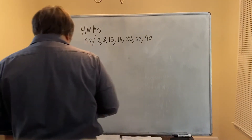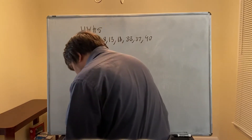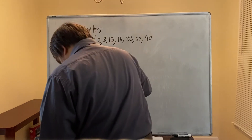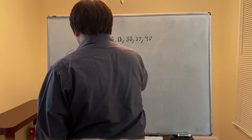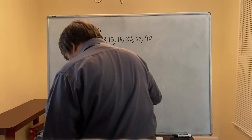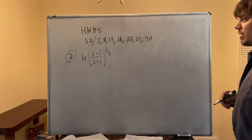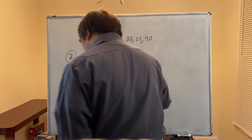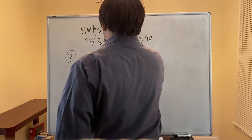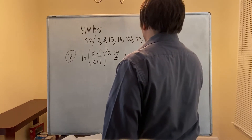For number 2, section 5.2: use the laws of logarithms to expand the quantity. We have ln of the cubed root of (x minus 1) over (x plus 1), which is that expression raised to the one-third power. By the third law, this is one-third times ln of (x minus 1) over (x plus 1).